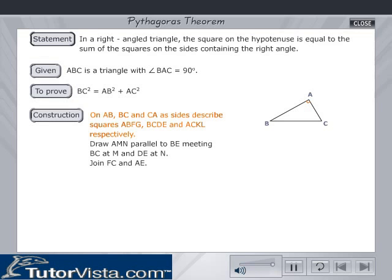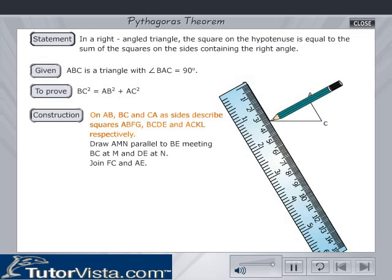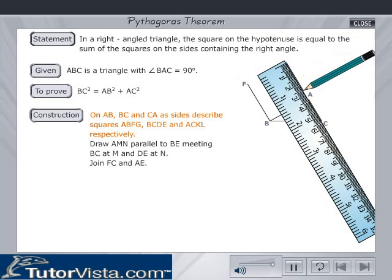Construction: On AB, BC, and CA as sides, describe squares ABFG, BCDE, and ACKL respectively.